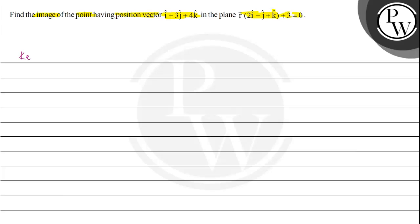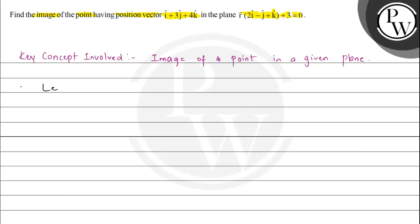The key concept involved in this problem is the image of a point in a given plane. There are various methods of calculating this. The method we'll use is to assume that A(x, y, z) is the image of the given point.